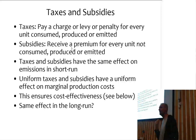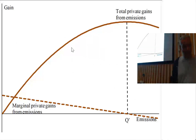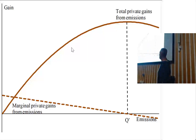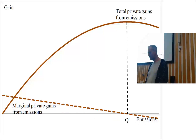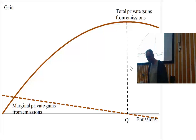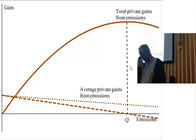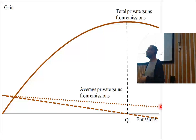In the short run the average doesn't matter, but it does in the long run because average private gains are related to return on investment. Previously I showed the marginal private gains curve — your rational amount of emissions is where marginal private gains equals zero, corresponding to the point where total private gains are maximum. What happens to the average? That looks something like this. The average doesn't matter in the short run, but it matters in the long run.